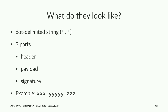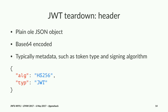So let's look at each one of those in a little more detail. The header is just a plain old JSON object — it's base64 encoded to turn it into a string. In the header you'd have metadata, such as the signing algorithm, which in this case is HMAC SHA-256, and the type of token, which is a JSON Web Token. There are other types, but I'm not going to talk about them today.